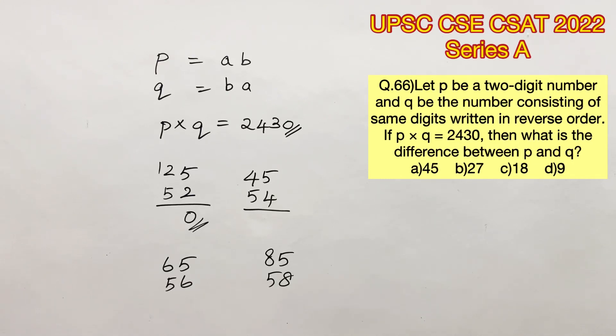Now let's solve for 25 and 52. The product of 25 and 52 is 1300. Let's go for 45 and 54. The product of 45 and 54 will give us 2430.